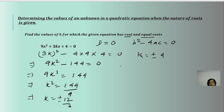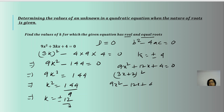If we take the positive value, we get 9x² + 12x + 4 = 0, which is a perfect square — the expansion of (3x + 2)². If we take the negative value, this becomes 9x² - 12x + 4 = 0, which is the expansion of (3x - 2)². From these, the real and equal roots are -2/3 and +2/3 respectively.